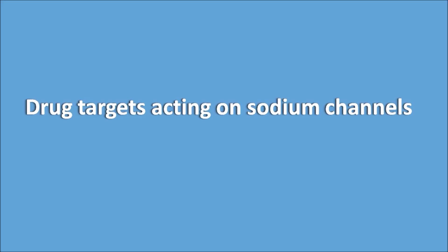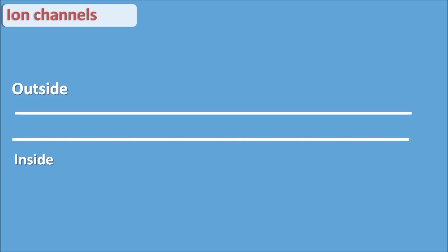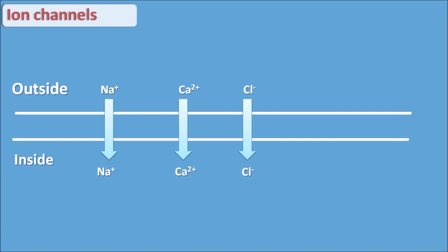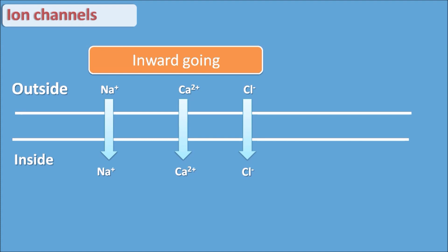We will discuss drug targets acting on sodium channels. First, we will see the different types of ion channels. Ion channels can be classified by whether they are going from outside to inside the cell membrane, or from inside to outside. For example, sodium and calcium are going into the cell, and chloride ions are also going into the cell. These are called inward-going ion channels.